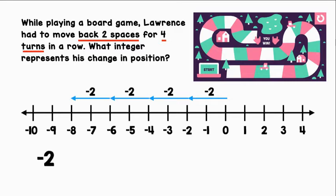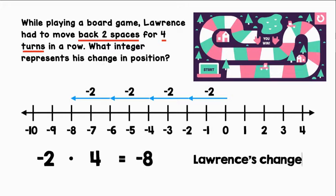We can say negative two times four equals negative eight. Lawrence's change in position is negative eight.